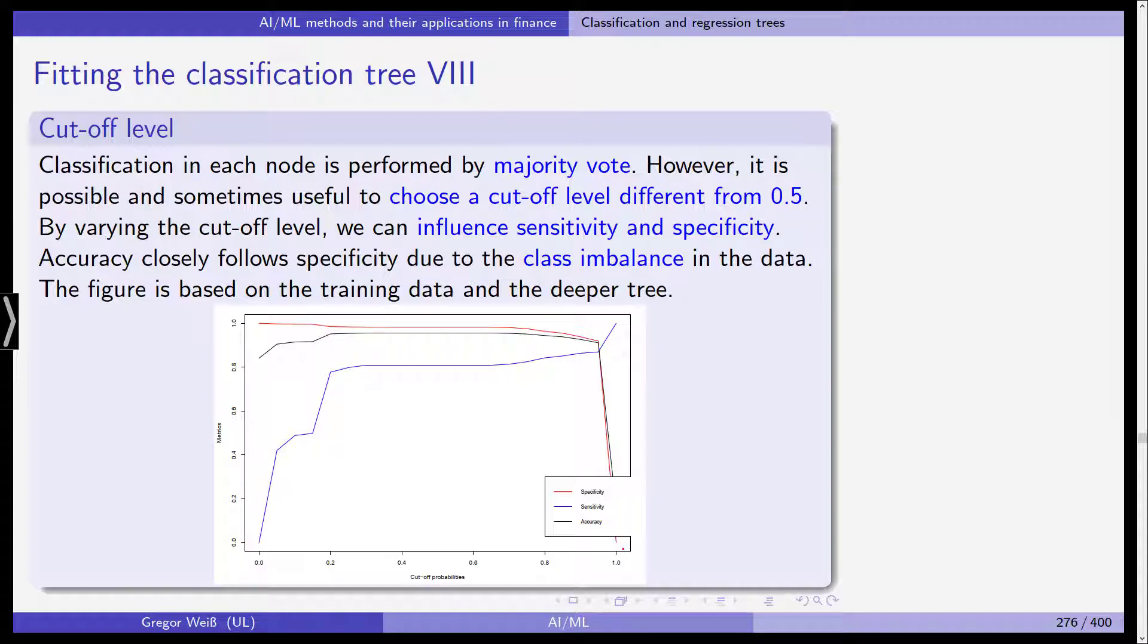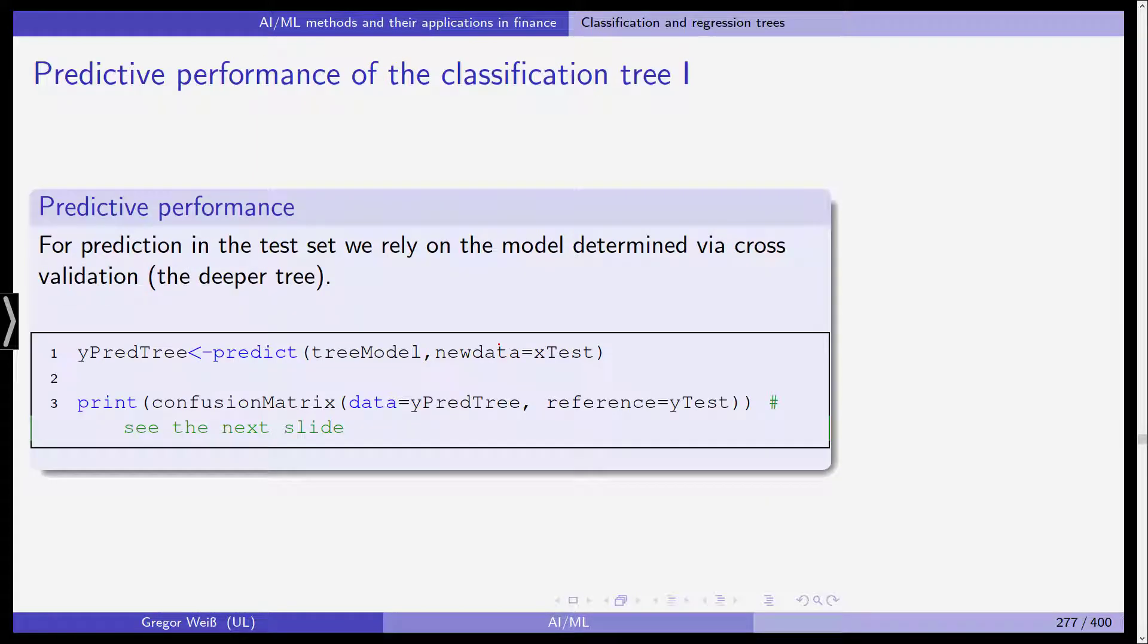The accuracy closely follows specificity due to the class imbalance in the data. This is shown on the training data in the deeper tree in this plot. You can see in red the specificity, in blue the sensitivity and black is the accuracy. You can see that if you take different cutoff probabilities, probably you shouldn't use 0 or close to 0 or close to 1. But as you can see, it's not constant for all these different cutoff probabilities. There might be a choice that increases the accuracy or the sensitivity of your model.